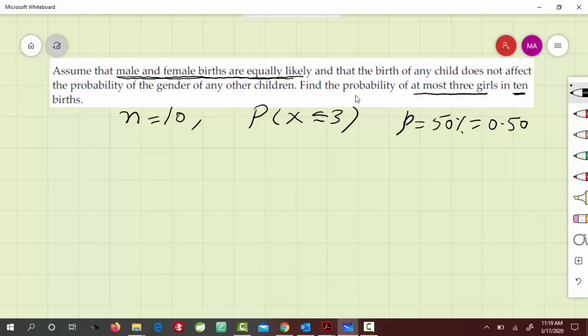Now, probability of x less than or equal to 3, that we have to find. We would express it first. So x less than or equal to 3 is equal to probability when x is 0, plus probability when x is 1, plus probability when x is 2, plus probability when x is 3.